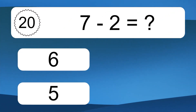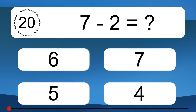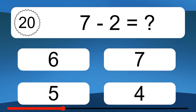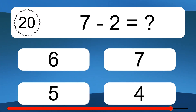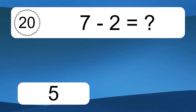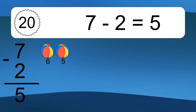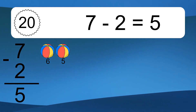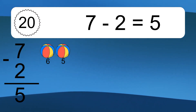7 minus 2 equals what? 7 minus 2 equals 5. Let's count it. 6, 5.